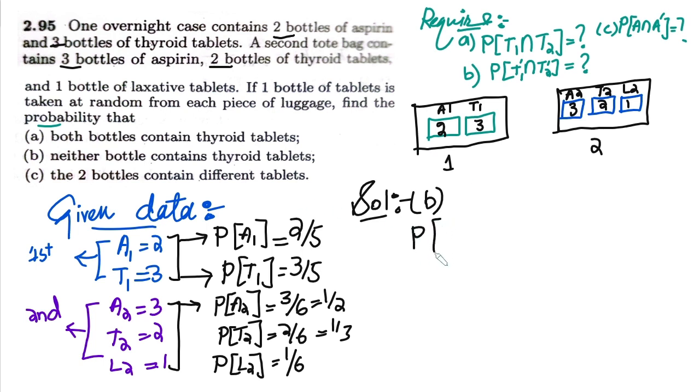Probability of neither are same. It can also be found out by 1 minus probability that both are same.